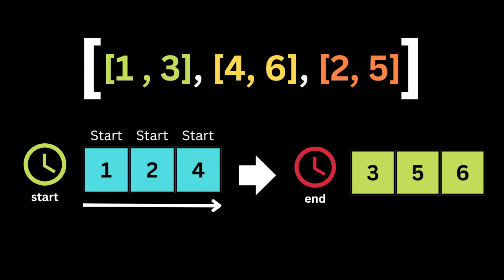Given the input list of meeting times, we first take all the meeting start times and put them in one list and sort them, and also take all the meeting end times and sort them in ascending order. Then we iterate through the sorted list of start times because we want to attend the meetings with the earliest start times.